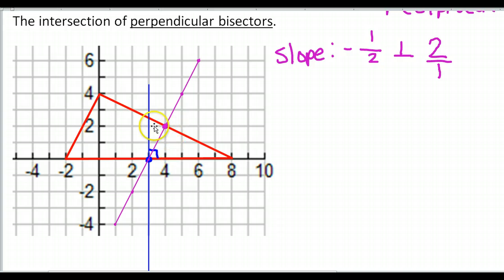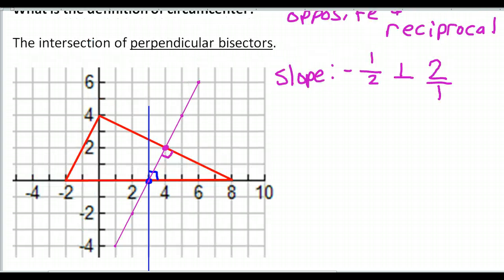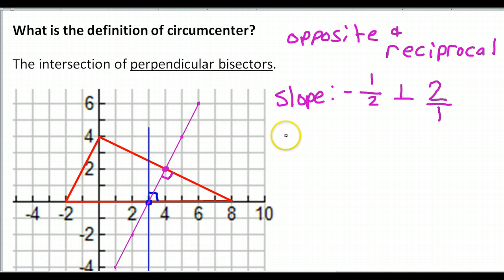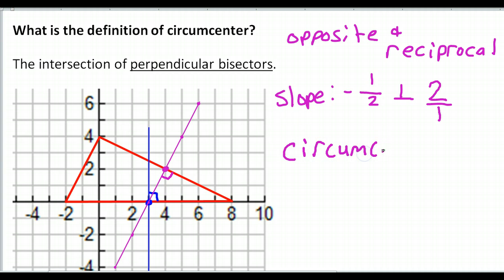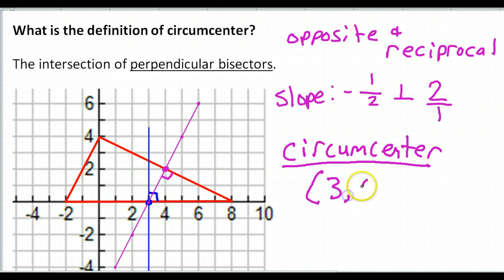This purple line is another perpendicular bisector. It's perpendicular right here, and it's a bisector — here is the midpoint. We've answered the question already. If I was looking for the circumcenter, I found it. The circumcenter is — the coordinates of the circumcenter would be, in this case, 3 comma 0. It's right there.